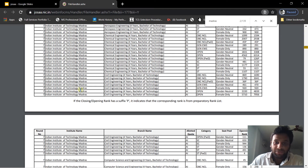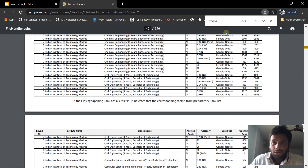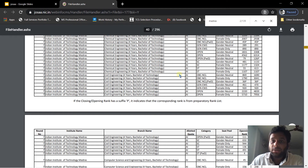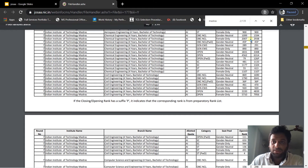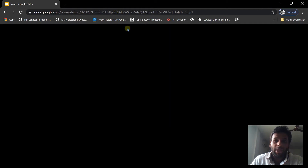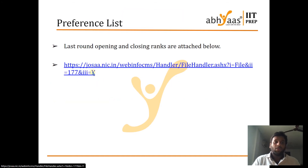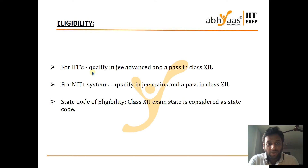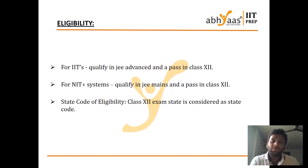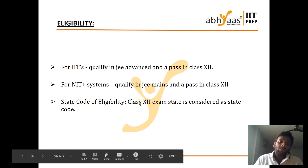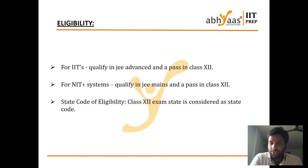State code of eligibility - I think majority of people don't know about this. State code of eligibility means wherever you are writing the class 12th exam, that is considered as your state code. Suppose you are a permanent resident of Hyderabad but you wrote your class 12th exam studying in Vijayawada, then your state code of eligibility will be Vijayawada. So if the candidate is a Hyderabad resident but appeared for class 12th in Vijayawada in AP, then his state code will be AP and not Hyderabad. You have to apply with that state code in the counseling process.